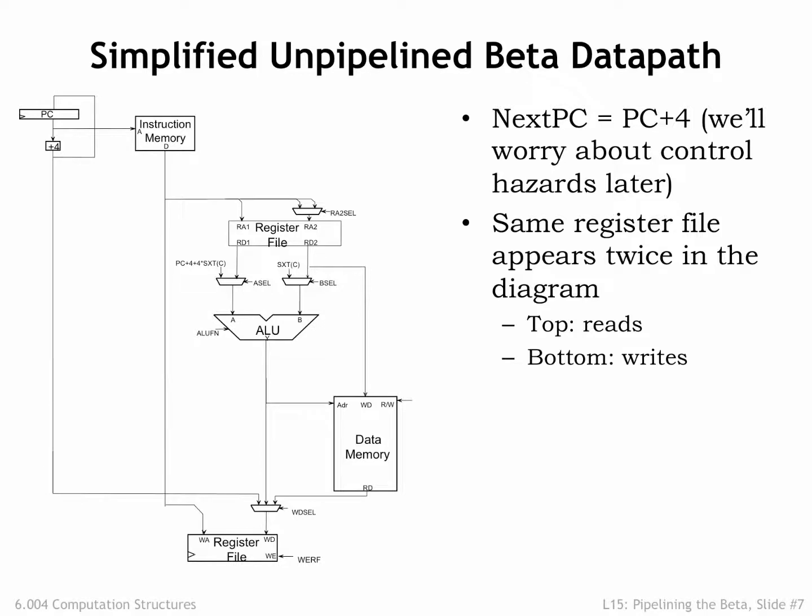The second simplification is to have the register file appear twice in the diagram so that we can tease apart the read and write operations that occur at different stages of instruction execution. The top register file shows the combinational read ports used when reading the register operands in the RF stage. The bottom register file shows the clocked write port used to write the result into the destination register at the end of the WB stage.